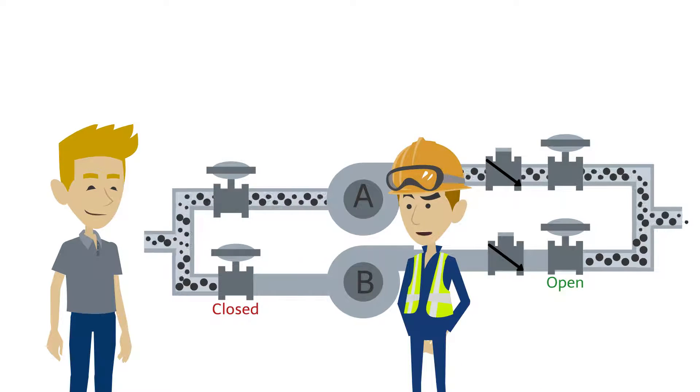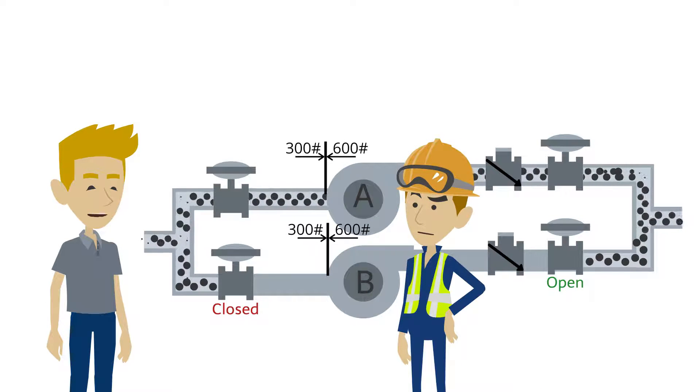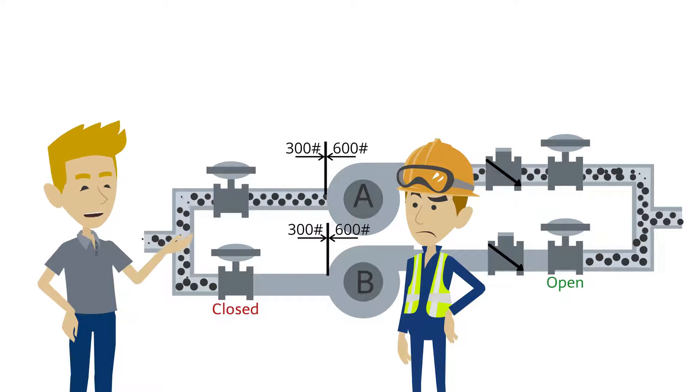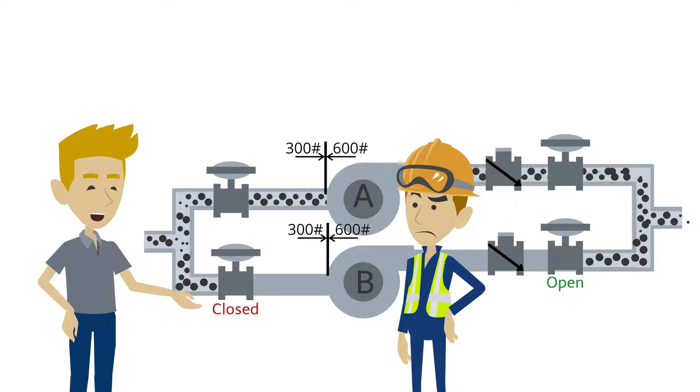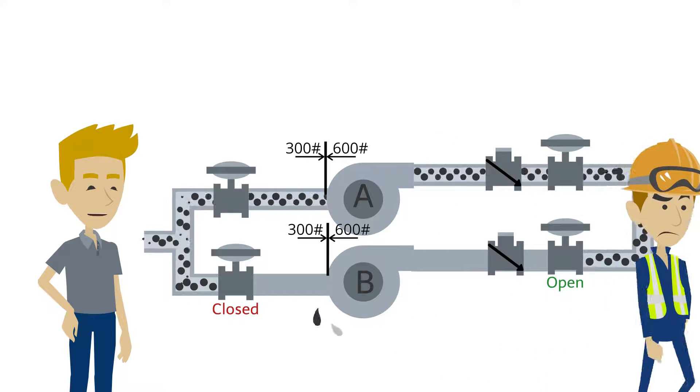Why was it leaking from the suction side? There is a spec break immediately upstream of the pump. High pressure fluid from the running pump A travelled back through the second tripped pump B to the suction side.